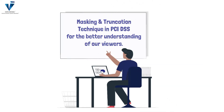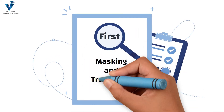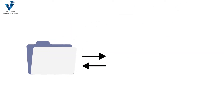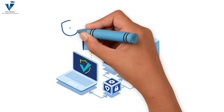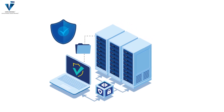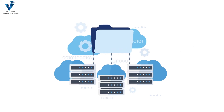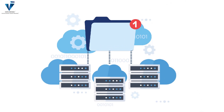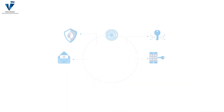Let us first understand both terms individually. Masking is a technique whereby sensitive data is masked with alternate characters, hash, or numbers to maintain the confidentiality of the data when displayed or presented to an individual. It is a technique adopted to ensure the security and privacy of the data. As per PCI DSS requirement 3.3, vendors must mask PAN when displayed.